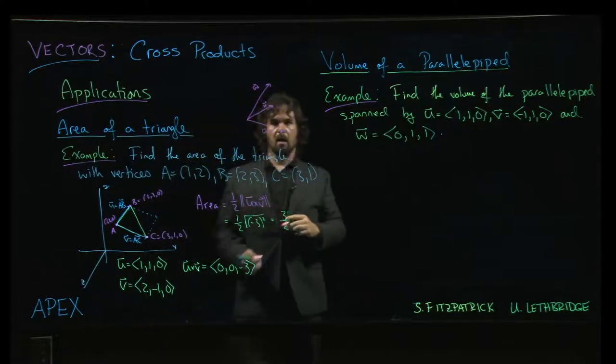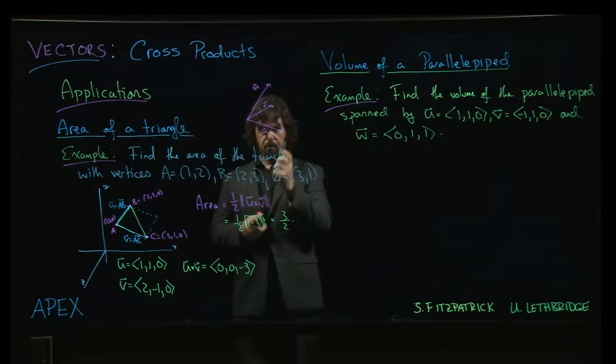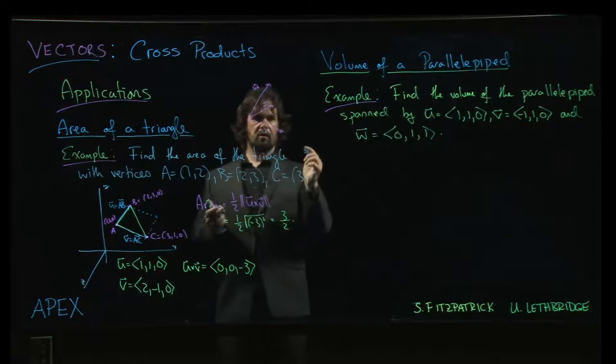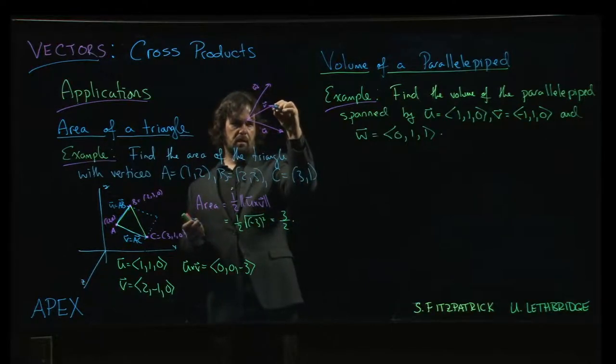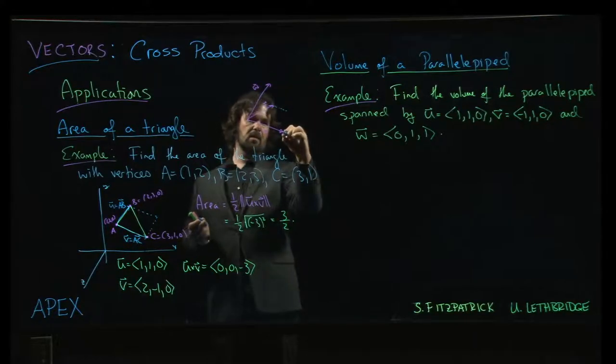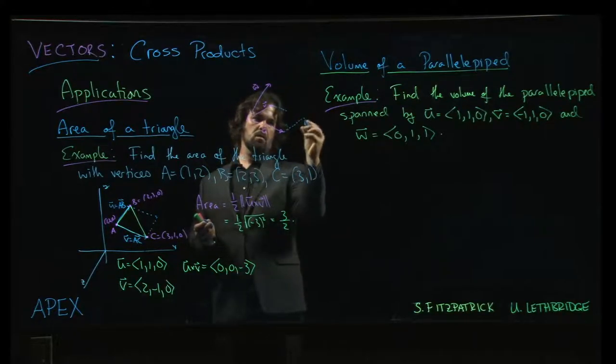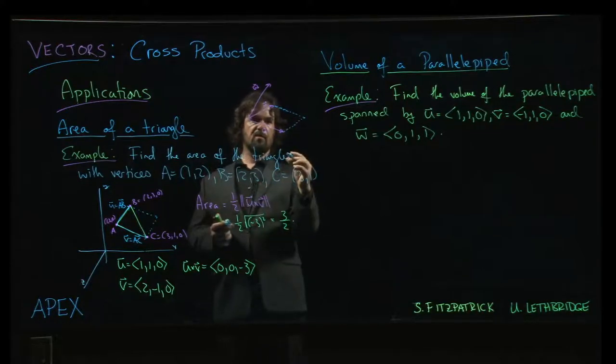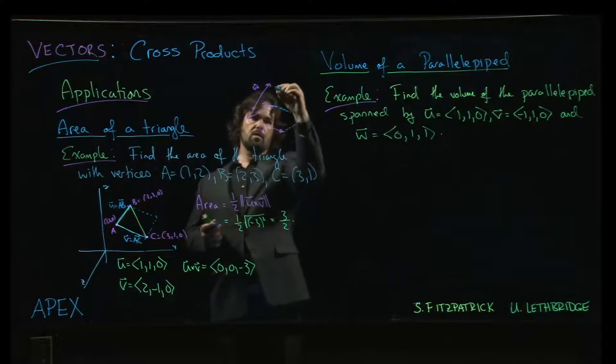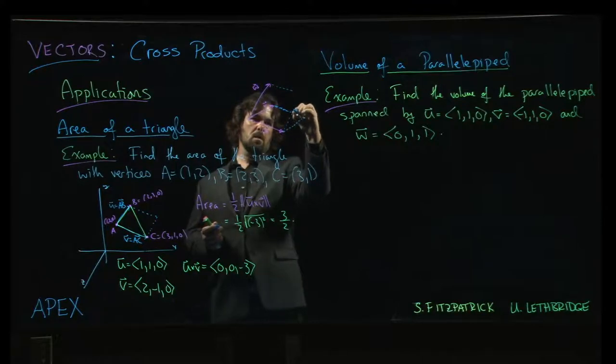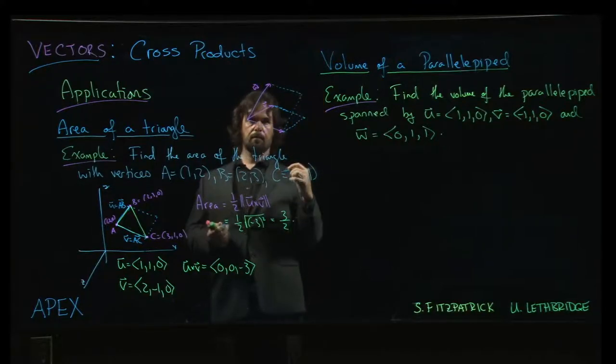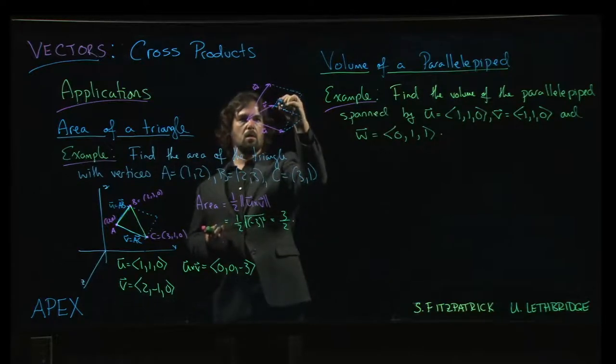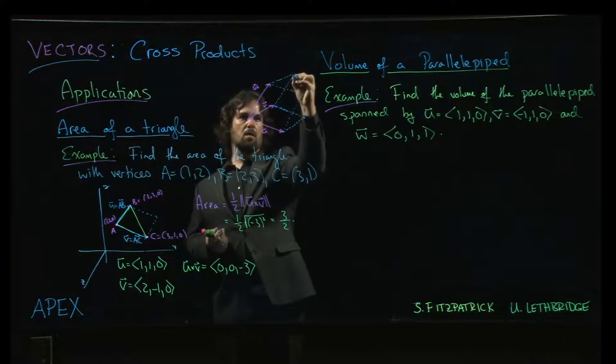So this is the three-dimensional analog of a parallelogram. You have three vectors - let's say u, v, and w. And none of these vectors should lie in the same plane. In language of linear algebra, these vectors are independent. So u and v form a parallelogram, u and w also form a parallelogram, and v and w form a parallelogram.